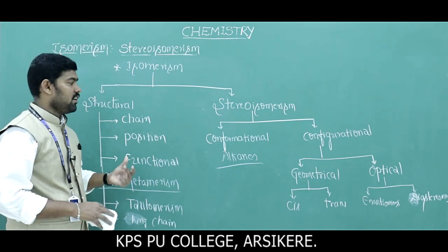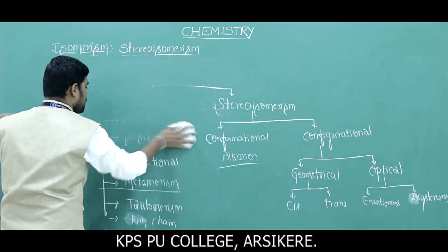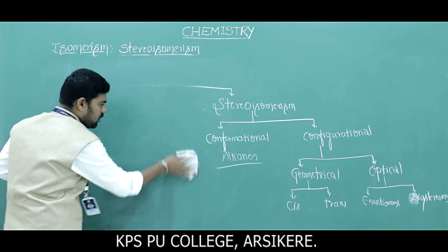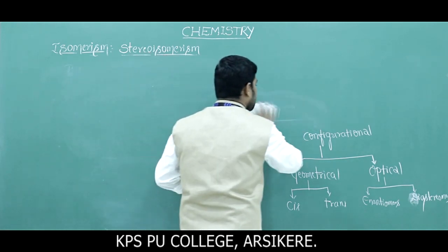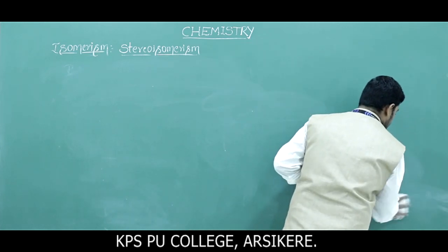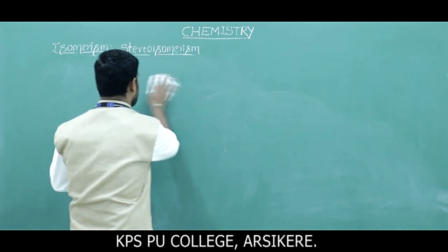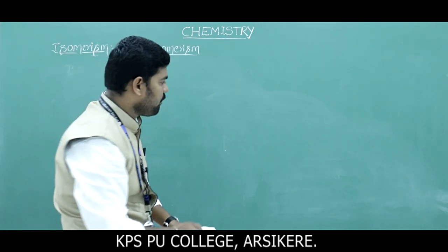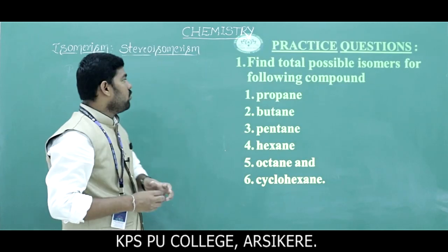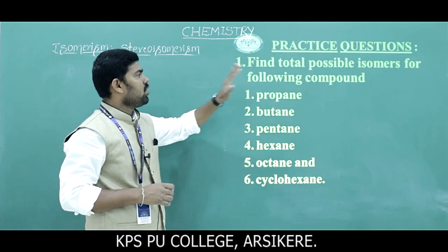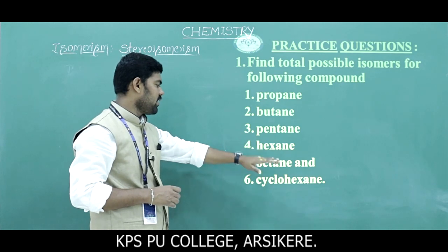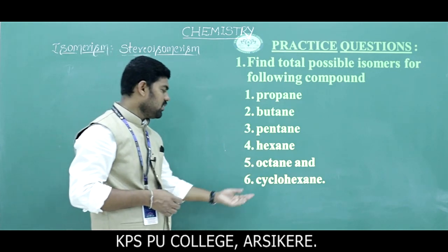Competitively, formal questions on isomerism have already been covered in class. Now the next topic is finding possible isomers. For example, questions about possible isomers of octane or decane. We need to find the total possible isomers for the following compounds: propane, butane, pentane, hexane, octane, and cyclohexane.